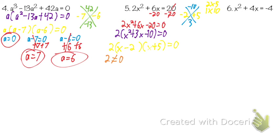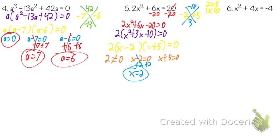What's my next equation? X minus 2 equals zero. And my last equation? X plus 5 equals zero. How do I solve the middle equation? Add 2 — X equals 2. And how do I solve my last equation? Subtract 5 — X equals negative 5.